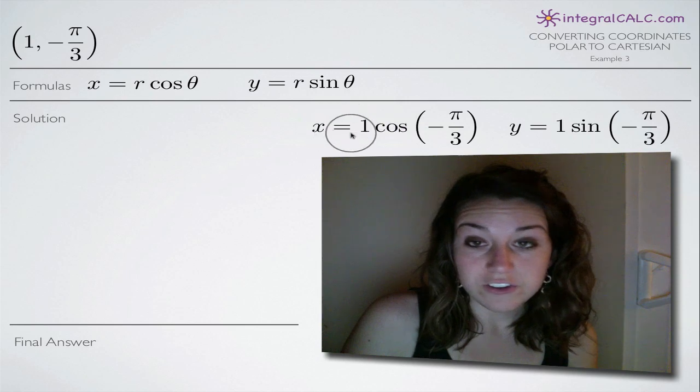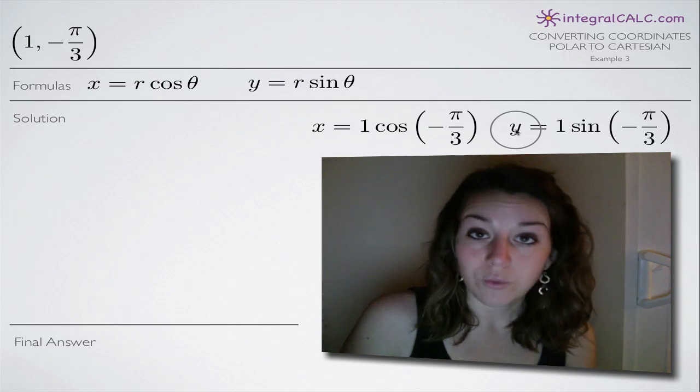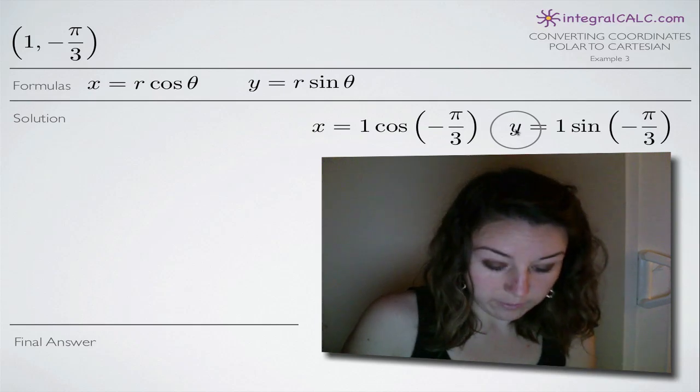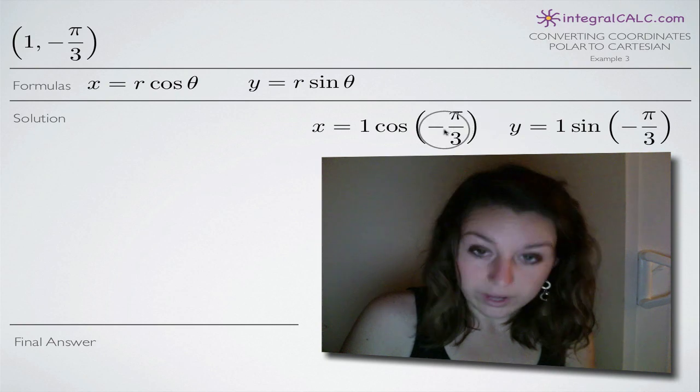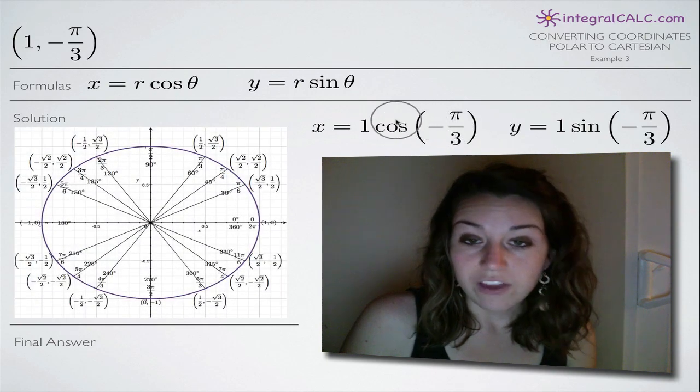So now what we need to do is just simplify these two equations here, the x equation and the y equation, and our answer will give us our x and y Cartesian coordinates. So what we'll need to do is use the unit circle here to evaluate these two functions.